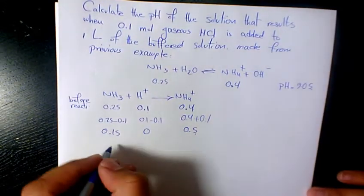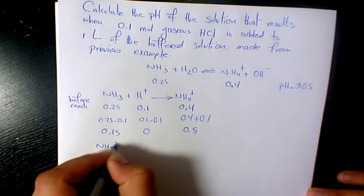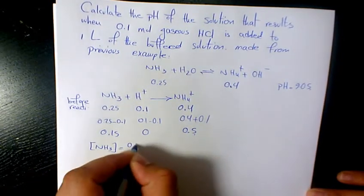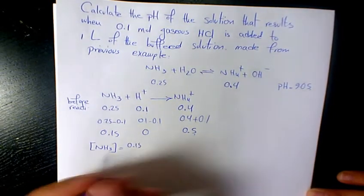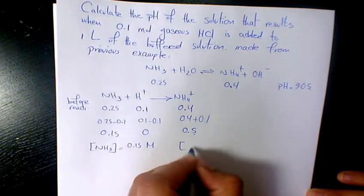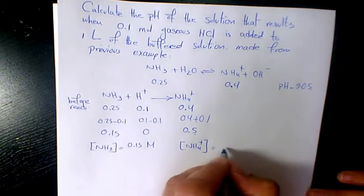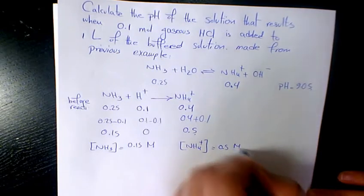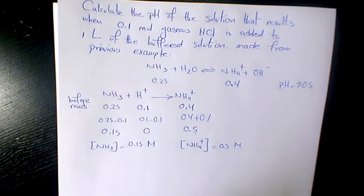Then we can say the concentration of ammonia will be 0.15 divided by 1, so it's going to be 0.15 molar. And ammonium ion is going to be 0.5 mol per liter. So that's going to be the concentration after the neutralization reaction.